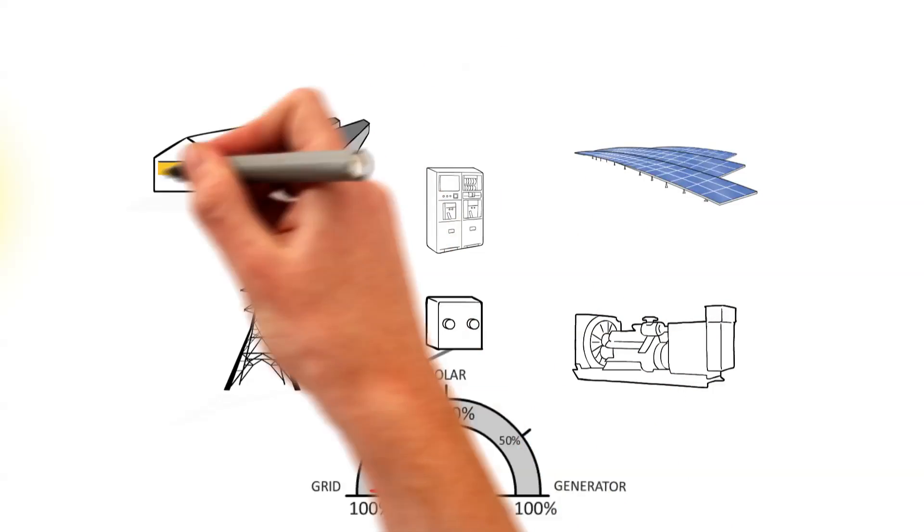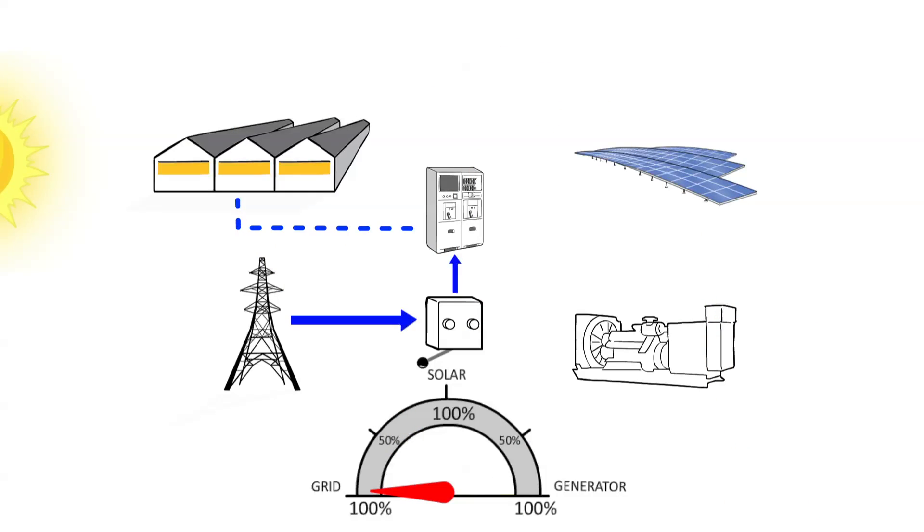The hybrid technology automatically allows the solar system to synchronise with a grid. Whilst the solar panels are generating electricity, the system controls will automatically lessen the demand from the grid supply and use more electricity produced by the solar system. This happens seamlessly, so you always have a stable and consistent power supply to your business.